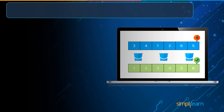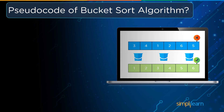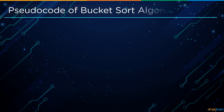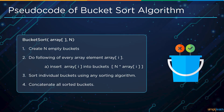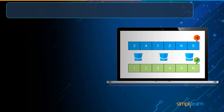Now for the pseudocode — pseudocode is an informal programming description that does not require strict programming language syntax. First, we create n empty buckets. Next, we insert all array elements into buckets by multiplying the size of the array — doing this for every element. After that, we sort individual buckets using insertion sort, and finally concatenate all the sorted buckets.